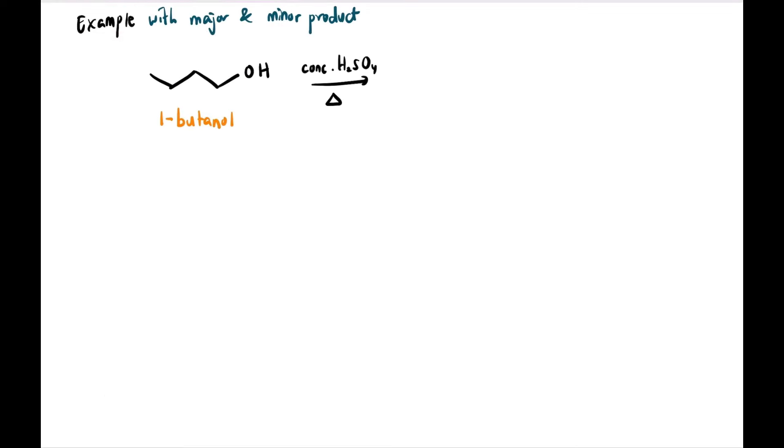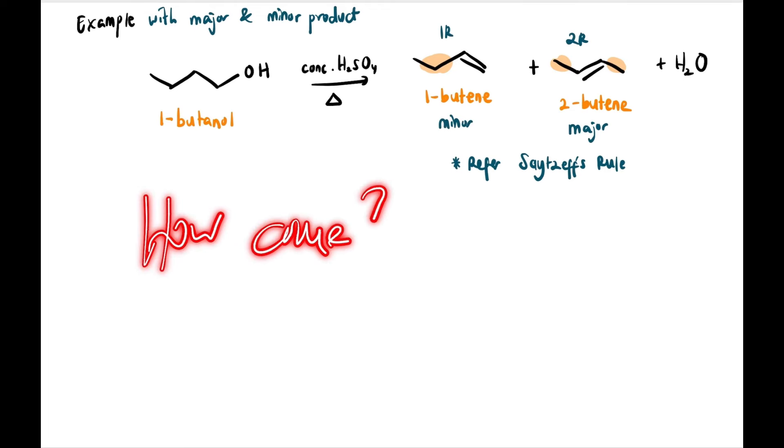Now let's have a look at an example with major and minor products. For example, 1-butanol here with heating and concentrated H2SO4. Usually we would get the double bond there at the end, right? But somehow the product we get is a combination of 1-butene and 2-butene. And it turns out, when we check based on Saytzeff's rule, 2-butene is actually the major product because 1-butene has only one R group while 2-butene has two R groups. But how can it go to the middle instead of at the end?